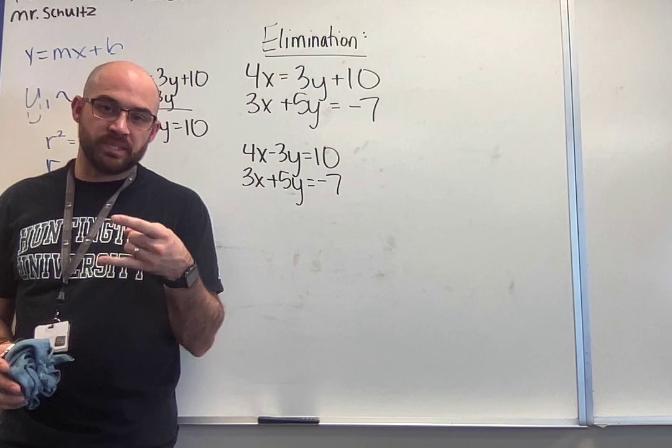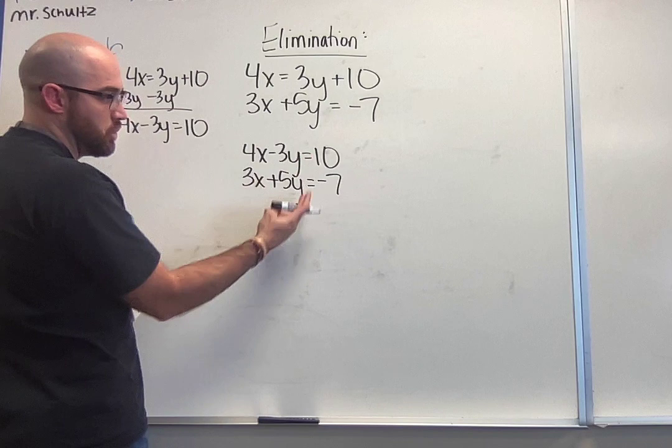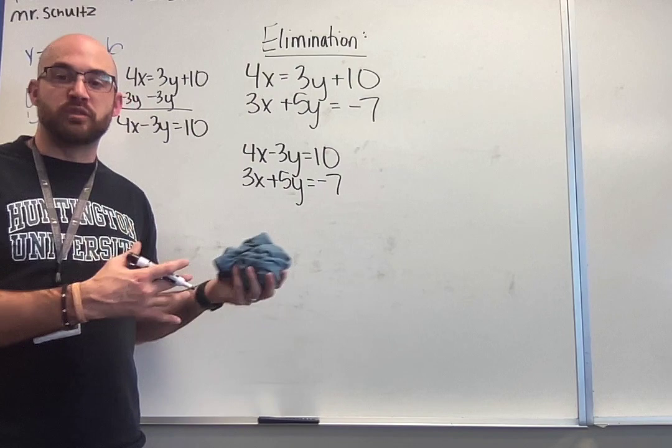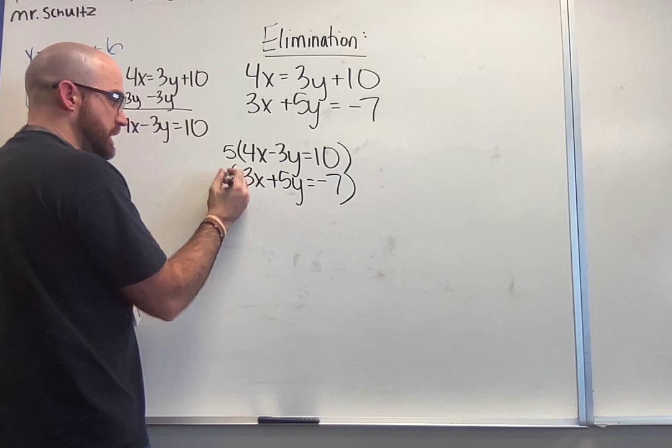From here, our goal is to get it so we have the same number but opposite signs in front of one of my variables, and we do that by using multiplication. When I look at this problem, you can choose either x's or y's. For this one, some students are going to choose the y, and I agree with that. One is positive, one is negative. If I have a 3 and a 5, the number that they both would go to would be 15. So I need to get it so both of them go to 15. They're already the opposite signs, so I don't need to change what I'm multiplying by. I don't need to put a negative out here. So here I do times 5. On the bottom, to get a 5 to a 15, I need to do times 3.